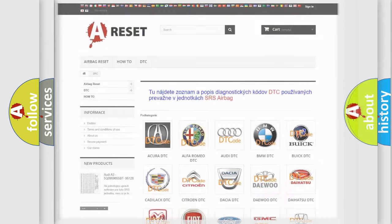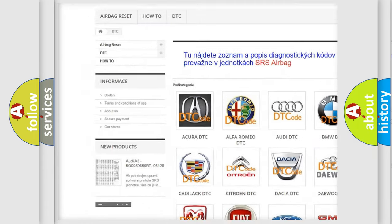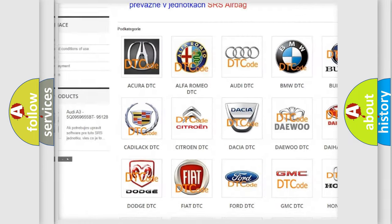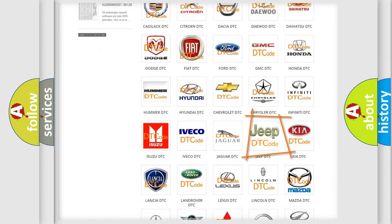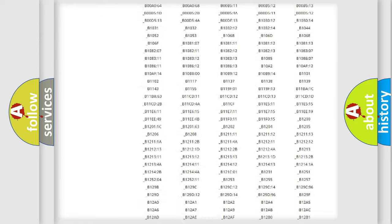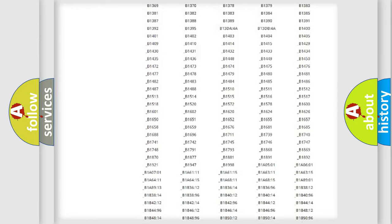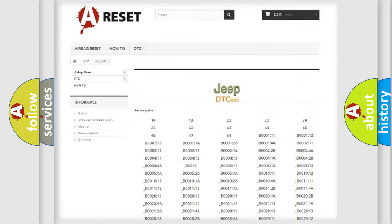Our website airbagreset.sk produces useful videos for you. You do not have to go through the OBD2 protocol anymore to know how to troubleshoot any car breakdown. You will find all the diagnostic codes that can be diagnosed in Jeep vehicles.